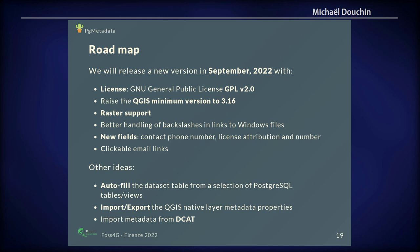On the roadmap, we will release a new version — I hoped to release one just before today but did not manage it. In September, we will add a license field (GPL 2.0 compatibility), raise the QGIS minimum version to 3.16, add raster support, better handling of backslashes in links, new fields for the contact and the license, and other things. We also want to improve the import-export tools to facilitate data exchange between different software.